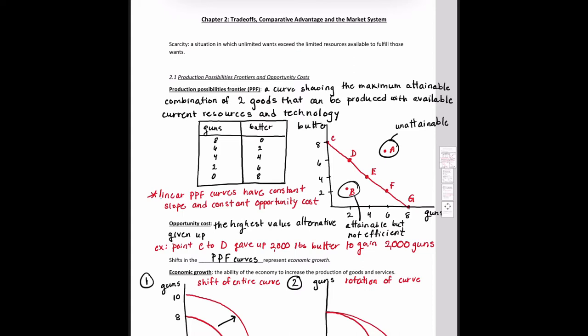Hello, welcome back. In this video we'll be covering chapter two: trade-offs, comparative advantage, and the market system. We'll be introducing the first economic model this semester, the production possibilities frontier. But before we get into that, I want to remind you of what the economic problem every society must face is. The answer is scarcity — when unlimited wants exceed limited resources, therefore we face trade-offs. What the PPF curve shows us is a graphical representation of these trade-offs.